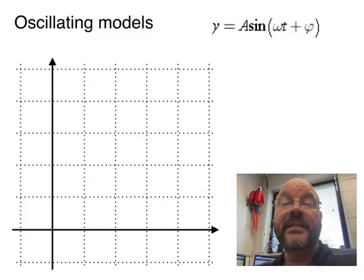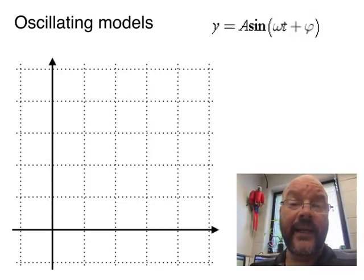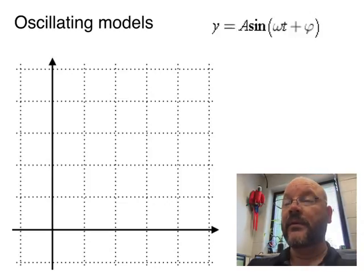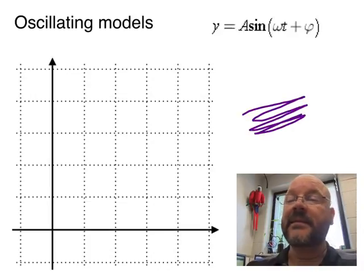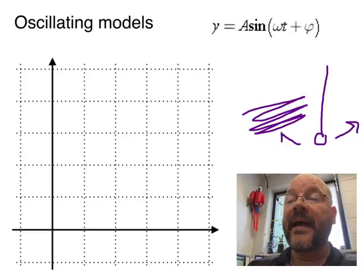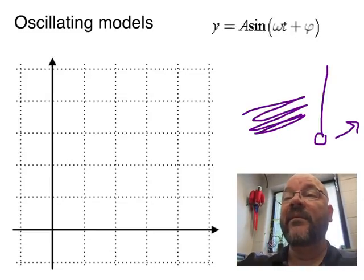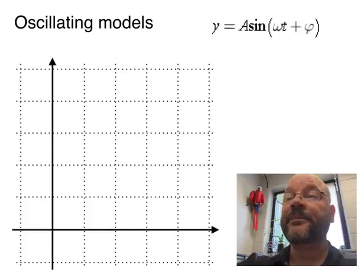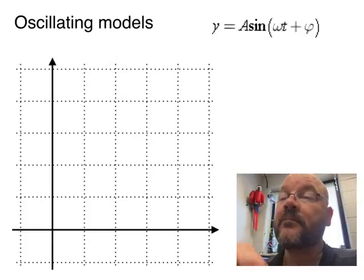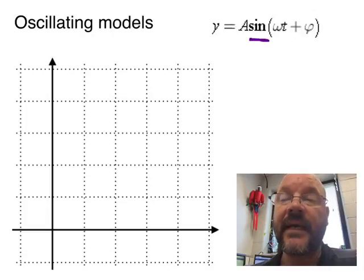The last equation that we'll look at here is an oscillating model. Something, if it oscillates, goes back and forth. So it could be a pendulum swinging back and forth like that, or any of a variety of things. So this guy right here, that's how we get it to oscillate. We use the sine function.